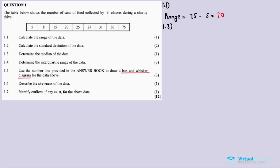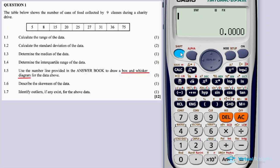1.2 is asking for the standard deviation of the data. I'll enter the data: five, eight, eight, fifteen, fifteen, fifteen, twenty, twenty, twenty, twenty-five, twenty-five, twenty-seven, thirty-one, thirty-one, thirty-six, and seventy-five. Using the calculator, number three gives the standard deviation equal to 19.56 in two decimal places.